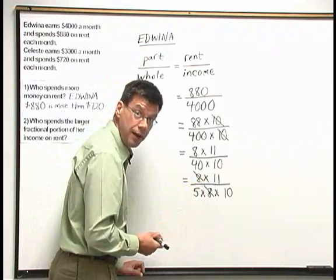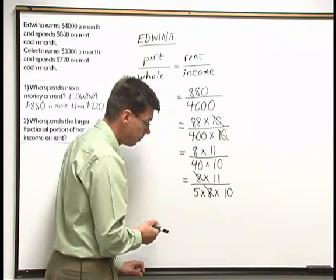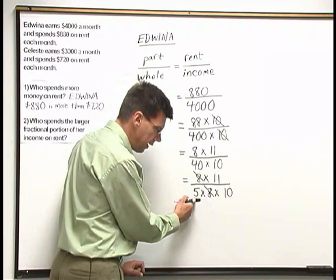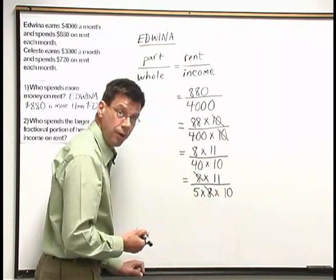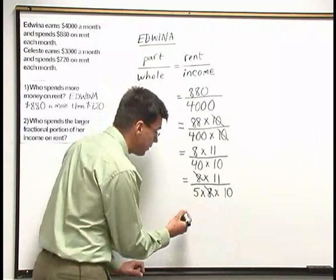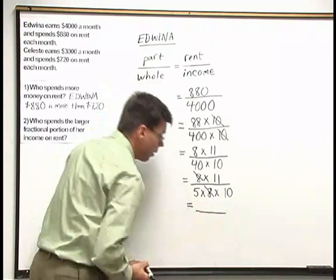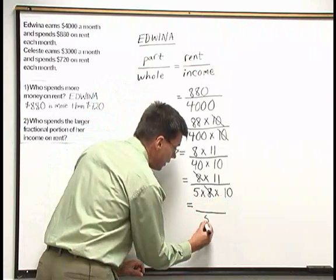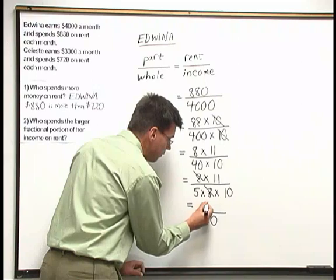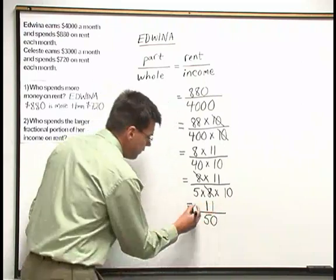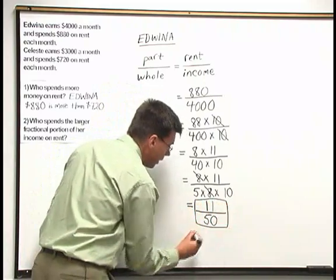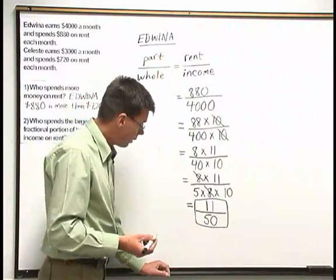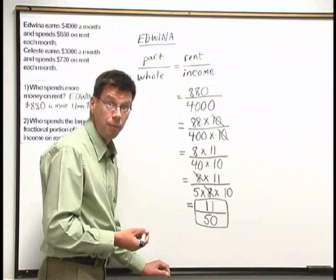Now I only have a factor of 11 up in the numerator. Since 11 is prime, it can't be broken down further, and I won't be able to get a factor of 11 from the 5 or the 10 below. So I've canceled all possible factors. Multiplying back the numbers below: 5 times 10 is 50. The reduced fraction is 11 fiftieths — that's the fraction of Edwina's monthly income that she spends on rent.